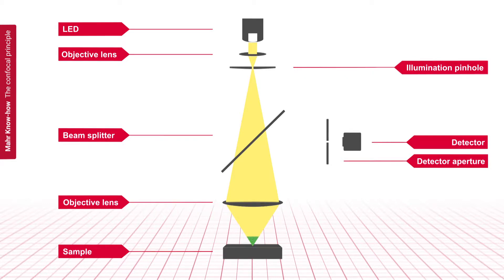A small punctiform spot on the sample surface is illuminated. The same spot is observed by a detector, in front of which an equally small aperture is located. Thus, both apertures focus on the exact same spot on the sample surface. This is why the term confocal is used.